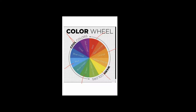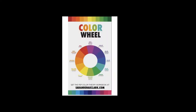Before moving to the next slide, I want to mention that from red to yellow-green, all those colors are called warm colors because they give us a feeling of warmth when we look at them. When we look at the range from green towards red-violet, we get a cool, pool-like feel — that is why they are called cool colors.